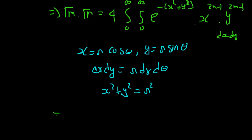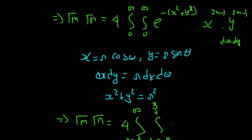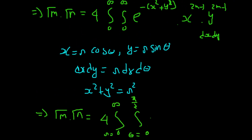Putting all those values into the above equation: r goes from 0 to infinity, and importantly, theta will go from 0 to pi by 2. The new theta term is introduced with the upper limit pi over 2.